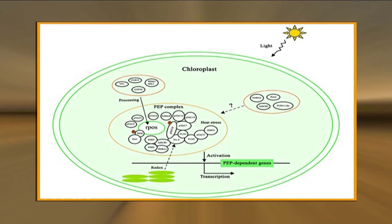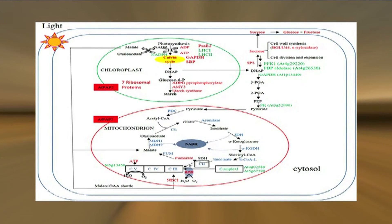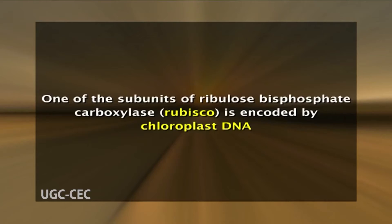Among RNA components of the translation system, the chloroplast genome encodes about 20 ribosomal proteins, which represent approximately a third of the proteins of chloroplast ribosomes. Some subunits of RNA polymerase are also encoded by chloroplasts, although additional RNA polymerase subunits and other factors needed for chloroplast gene expression are encoded in the nucleus. The chloroplast genome also encodes approximately 30 proteins that are involved in photosynthesis, including components of photosystem I and II, cytochrome b6f complex, and ATP synthase. In addition, one of the subunits of ribulose bisphosphate carboxylase (Rubisco) is encoded by chloroplast DNA.